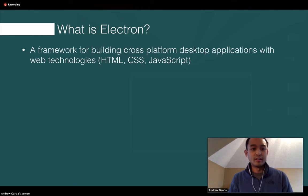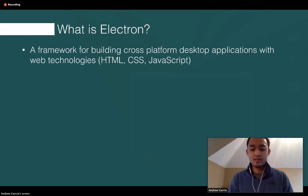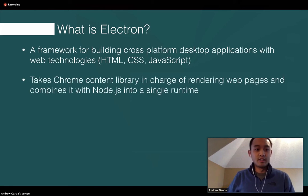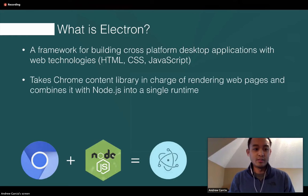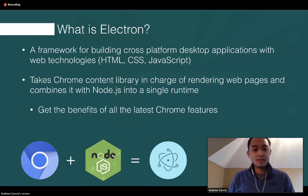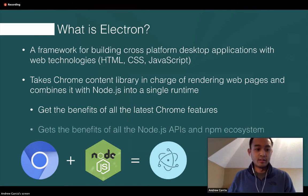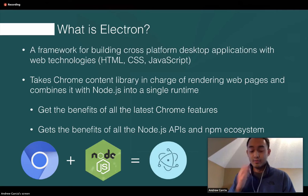So more in depth about what Electron actually is. In 2013, it came onto the scene as a framework for building cross-platform desktop applications with web technologies. How does it do this? It takes Chrome's content library, which is in charge of rendering web pages, and combines it with Node.js into a single runtime. This gives us all the latest Chrome features as well as all the benefits of Node.js APIs and NPM.